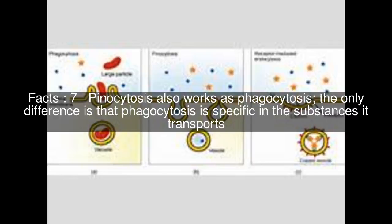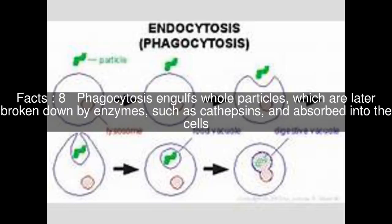Pinocytosis also works like phagocytosis; the only difference is that phagocytosis is specific in the substances it transports. Phagocytosis engulfs whole particles, which are later broken down by enzymes such as cathepsins and absorbed into the cells. Pinocytosis, on the other hand, is when the cell engulfs already dissolved or broken down food.